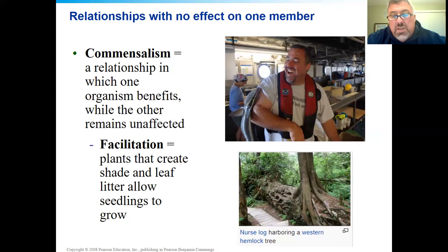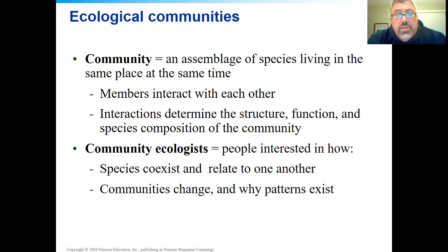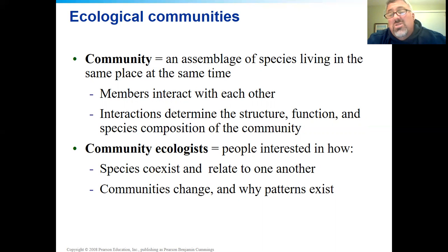Facilitation — pretty straightforward. An organism creates shade or provides resources for another. This is what's called a nurse log: it falls down and provides nutrients and growing area for other trees. What you'll see is all these trees in a row living off the nutrients from the fallen tree — in this case it was a hemlock. A community is basically all the organisms of different species living together at the same place at the same time, all interacting. A community ecologist is somebody who studies that — trying to figure out what's going on, how they react to each other.